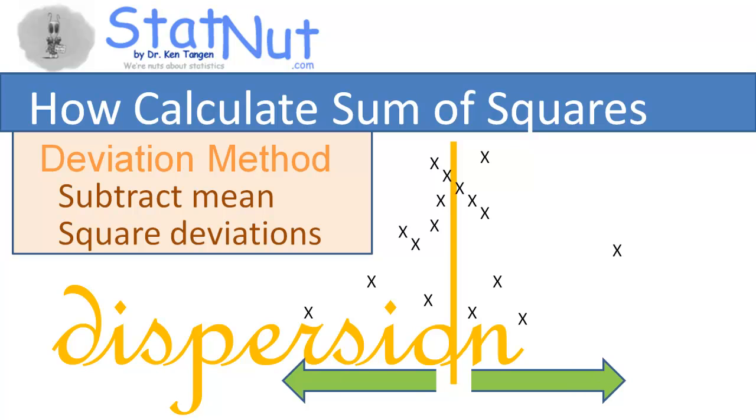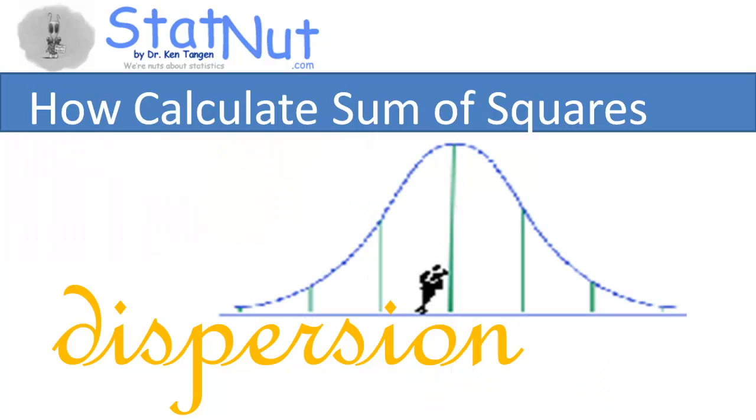Dispersion is how much scores deviate from the center, the mean. It is a measure of group heterogeneity. The more different the scores are within a group, the larger they disperse from the mean. So dispersion is how many scores deviate from the mean and by how much.